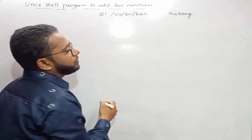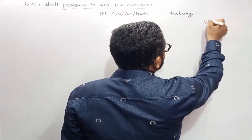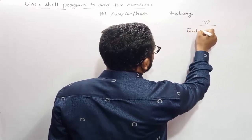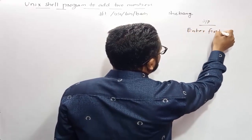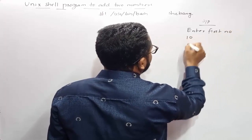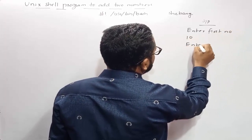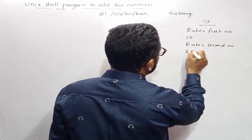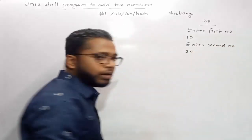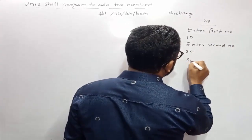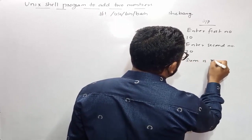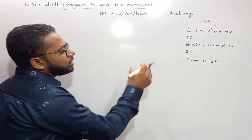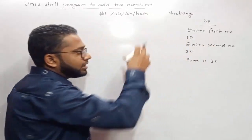Let us first write down the expected output of this program. When the program gets executed, it asks the user to enter the first number — the user enters 10. Then it asks for the second number — the user enters 20. Then we get the output: sum is 30.